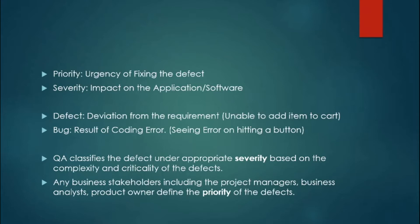Once you answer those two questions, the interviewer will ask further questions like: give an example of high priority high severity, high severity low priority, and so on. This is a sure-shot question that comes in both manual and automation testing interviews.